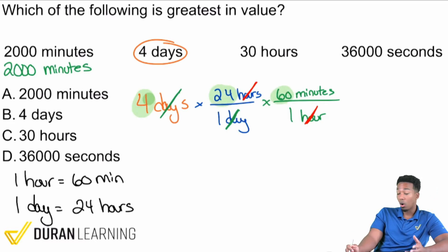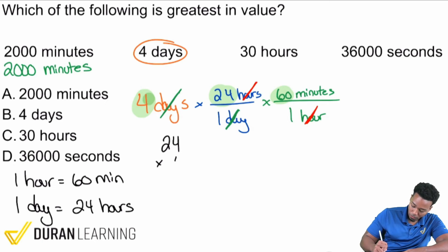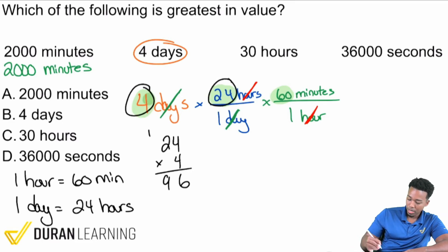So once we have all of that set up, all we have to do is perform our multiplication and we're done. Four times 24 times 60, that's all we need to do. So from there, don't waste time, just get to it. 24 times 4, what's that going to give me? 4 times 4 is 16, 2 times 4 is 8, carry the 1, 9. So we have 96.